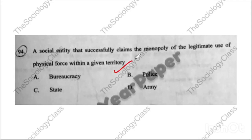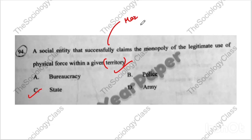Question number ninety-four: 'A social entity that successfully claims the monopoly of legitimate use of physical force within a given territory.' The correct answer is state. This is Max Weber's definition of state. Please remember.